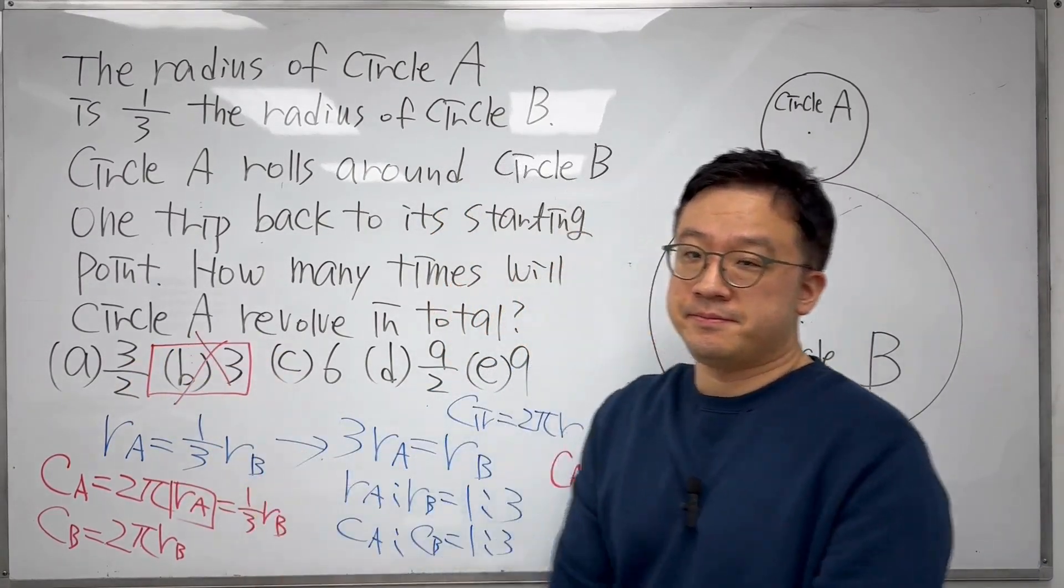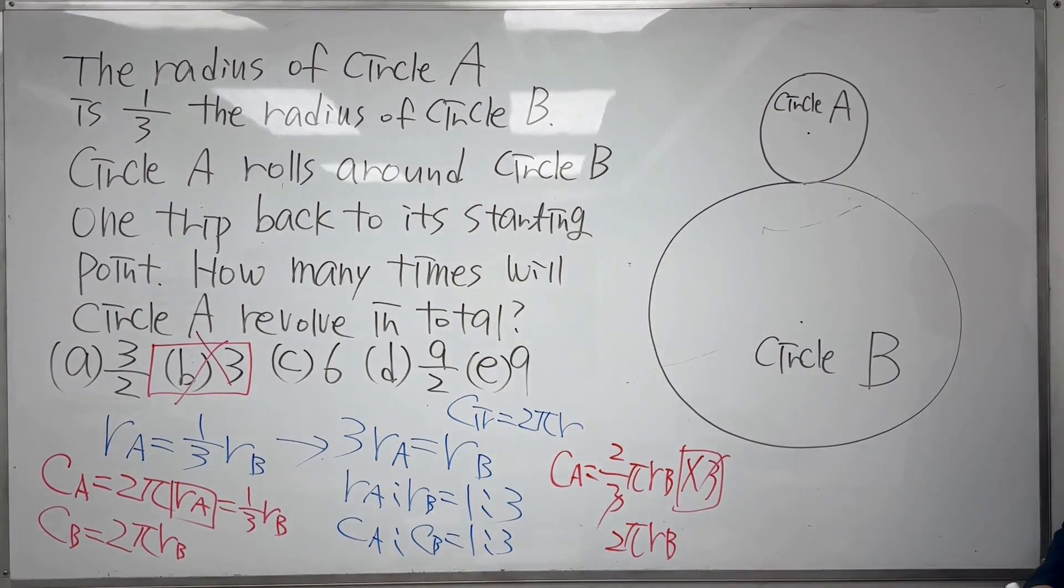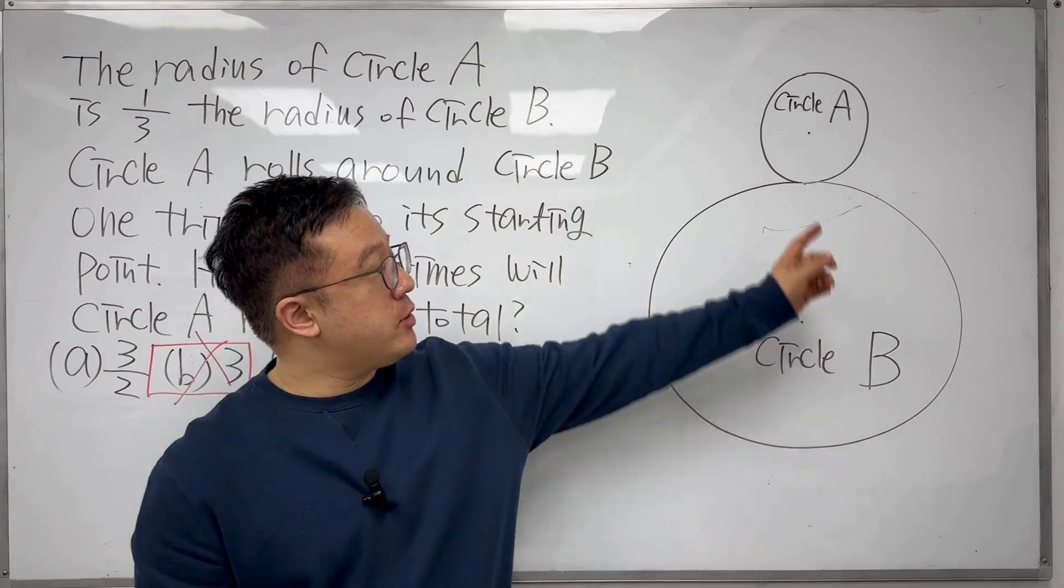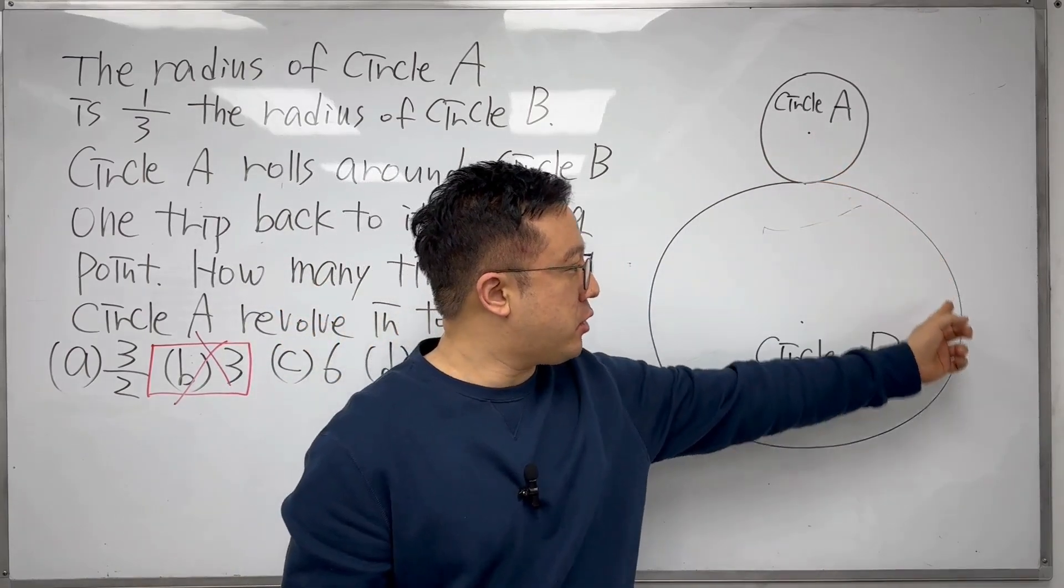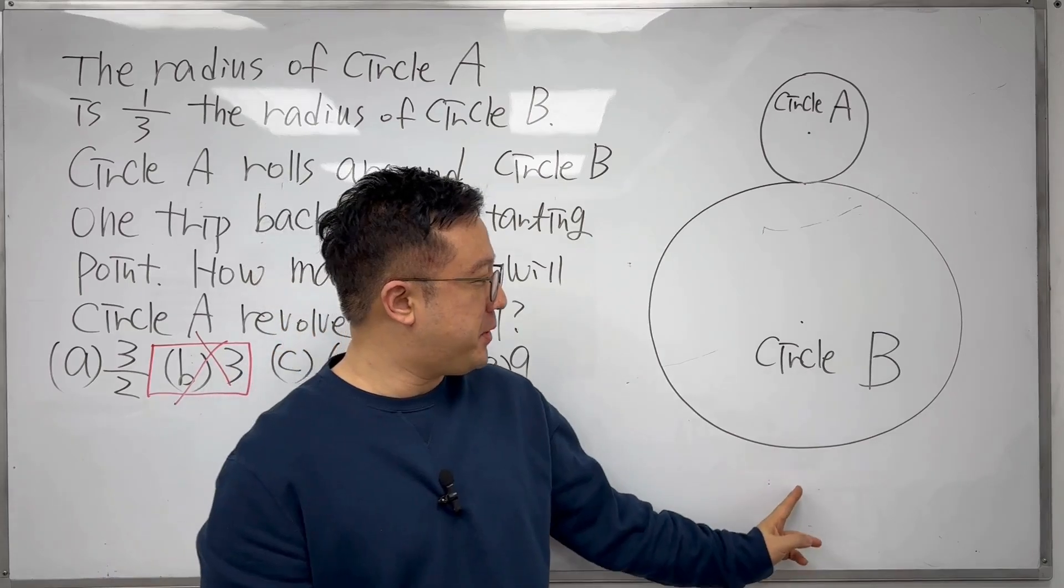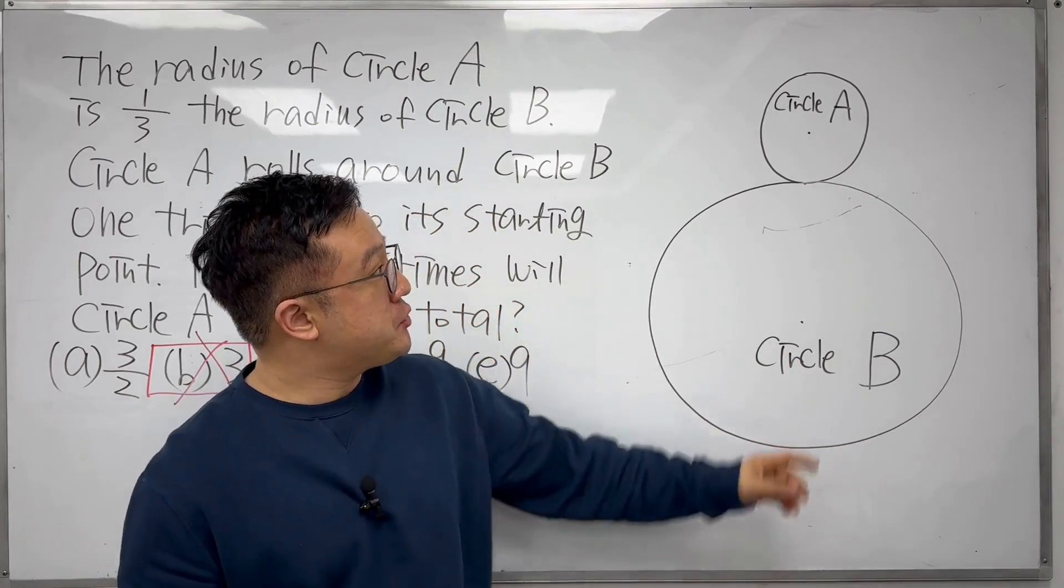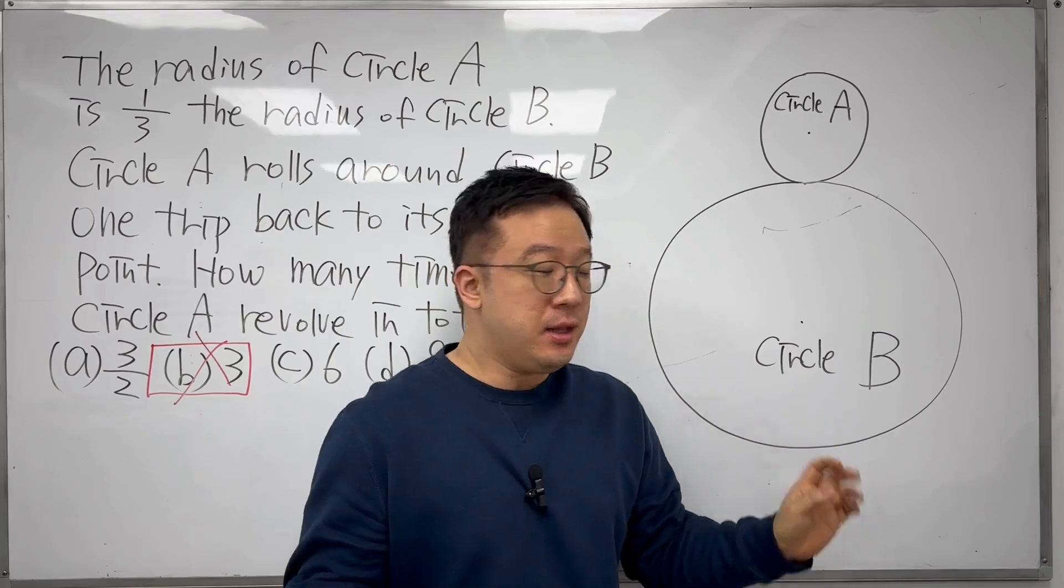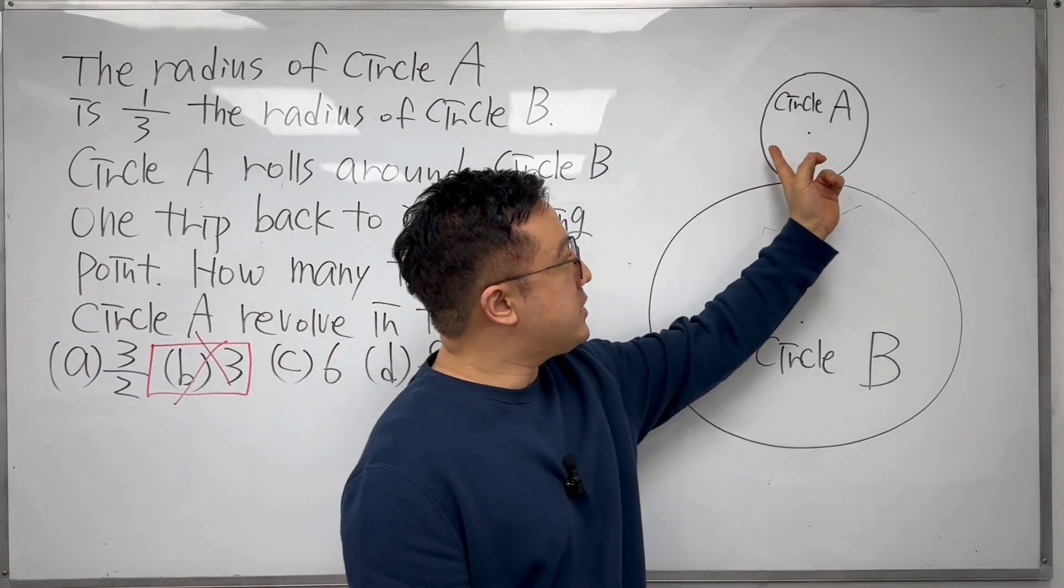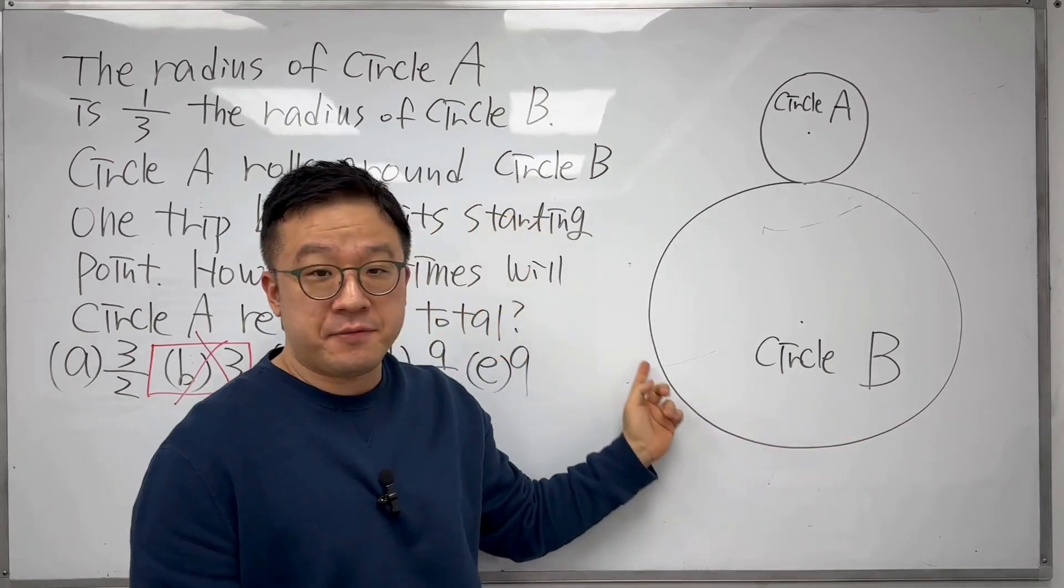But it was not the right answer. To see the reason why, we need to take a look at how circle A is rolling on the circumference of circle B. If you cut circle B somewhere and make it a straight line, and if circle A rolled on that straight line, then B might be the answer. But circle A is rolling on the circumference of circle B.